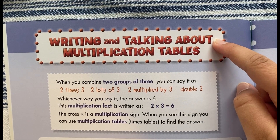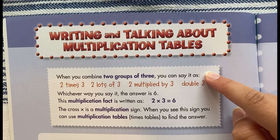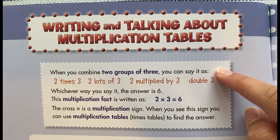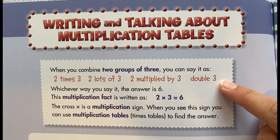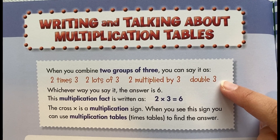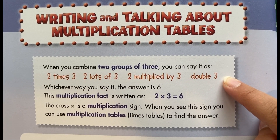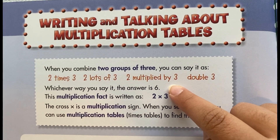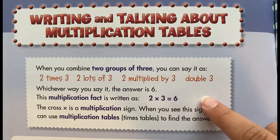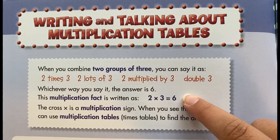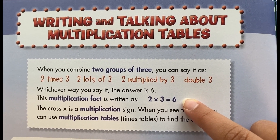Writing and talking about multiplication tables. When you combine two groups of three, you can say it as: two times three, two lots of three, two multiplied by three, or doubled three. Whichever way you say it, the answer is six. This multiplication fact is written as two times three equals six.